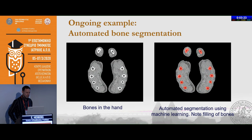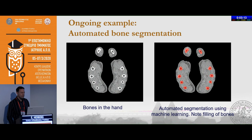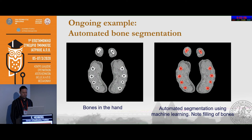Another ongoing project is automated bone segmentation. These are bones in the hands — the upper ones are the thumbs. You might think bone segmentation is quite easy on CT, and for visualization purposes it typically is. But when you want 3D printing, you want the bones to be filled and all small defects avoided, which is not straightforward. Really good bone segmentation is needed and would be advantageous, so we are currently training this network to see what we can achieve.